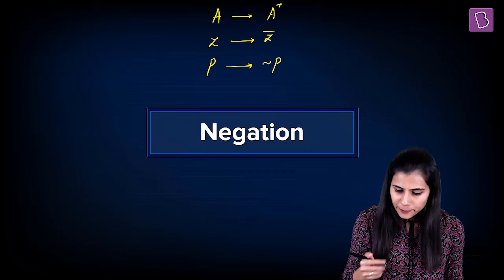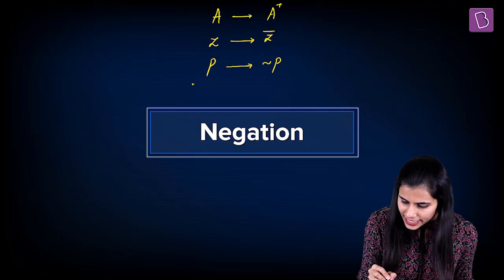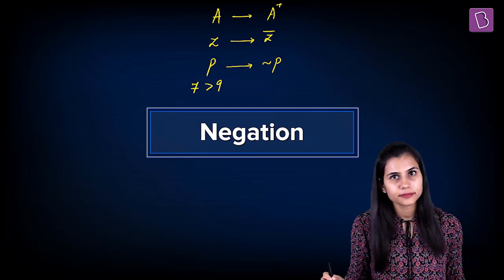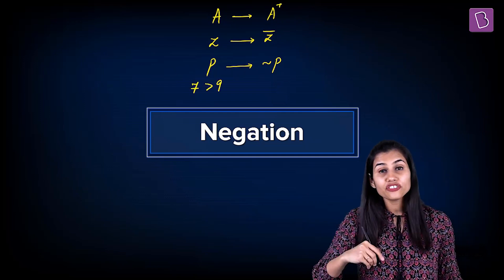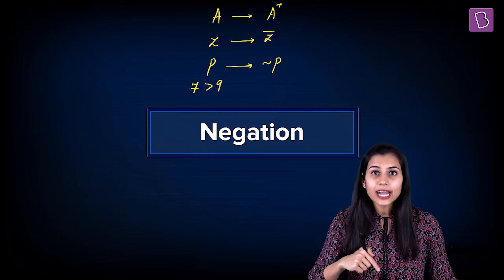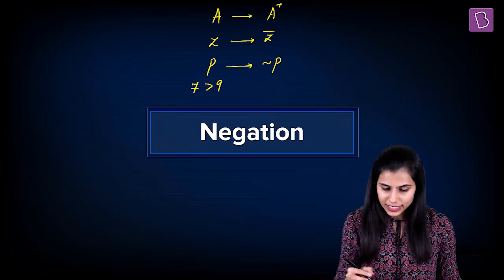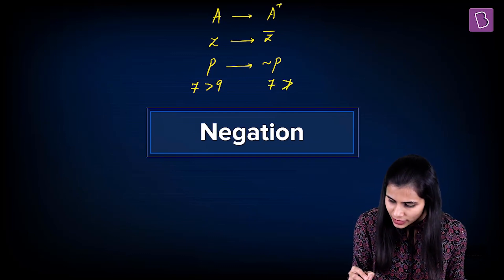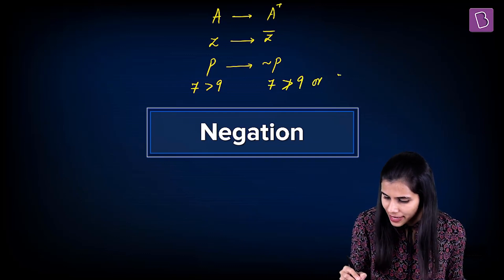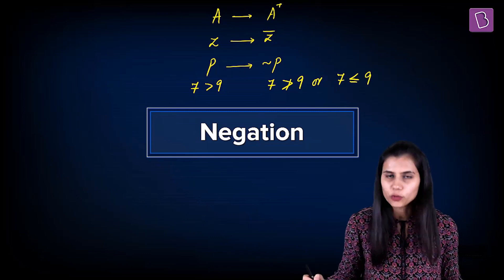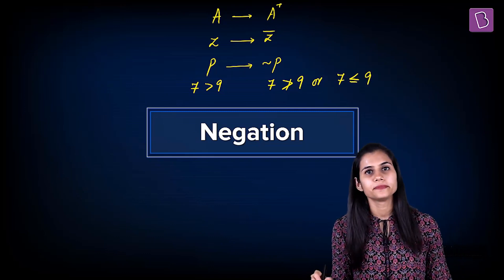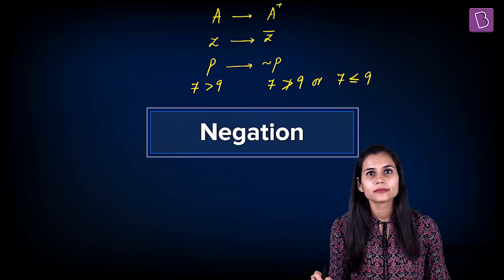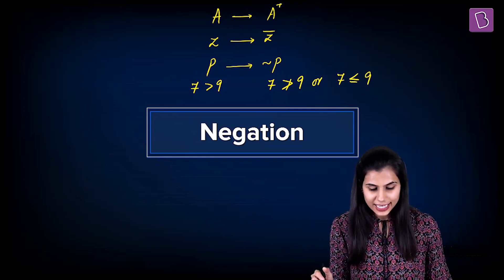For example, P says 7 is greater than 9. Negation P will deny this assertion — it will say 7 is not greater than 9, which is the same as 7 is less than or equal to 9.